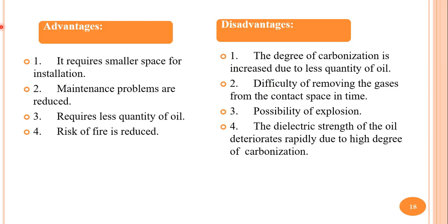The main advantages of the low oil circuit breaker are that it requires smaller space for installation, maintenance problems are reduced, it requires less quantity of oil, and the risk of fire is also reduced. The main disadvantages are that the degree of carbonization is increased due to the less quantity of oil, difficulty of removing gases from the contact space in time, and there is a possibility of explosion. The dielectric strength of the oil deteriorates rapidly due to high carbonization, requiring frequent oil replacement.